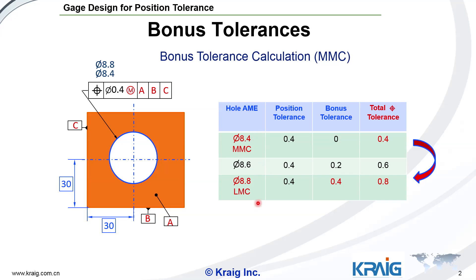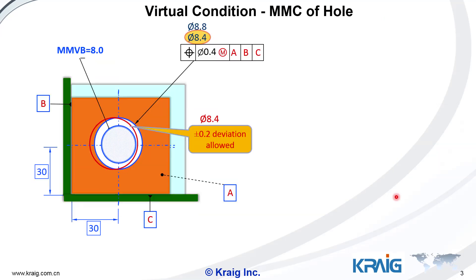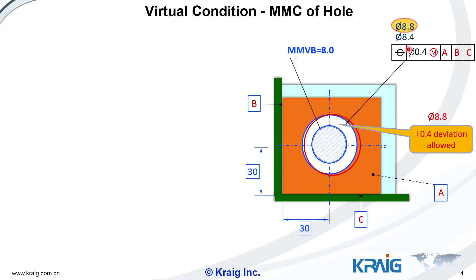At the largest size 8.8, the position tolerance becomes 0.8. So as the hole size becomes bigger, the total allowed position also becomes bigger. For the smallest hole, there's no bonus so deviation is plus/minus 0.2, meaning the position tolerance is 0.4. If the size becomes 8.8, the bonus is 0.4 and the total position is 0.8, meaning plus/minus 0.4 — so the larger hole can deviate more.